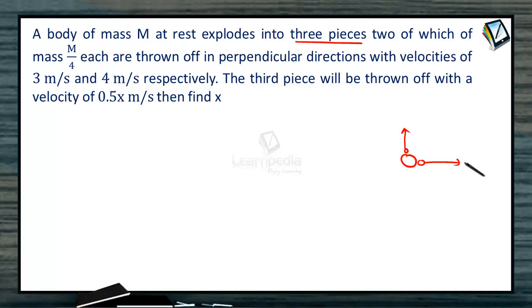Perpendicular direction with the velocities of 3 meter per second and 4 meter per second respectively. The third piece will be thrown off with the velocity 0.5 times x meter per second. Find the value of x.